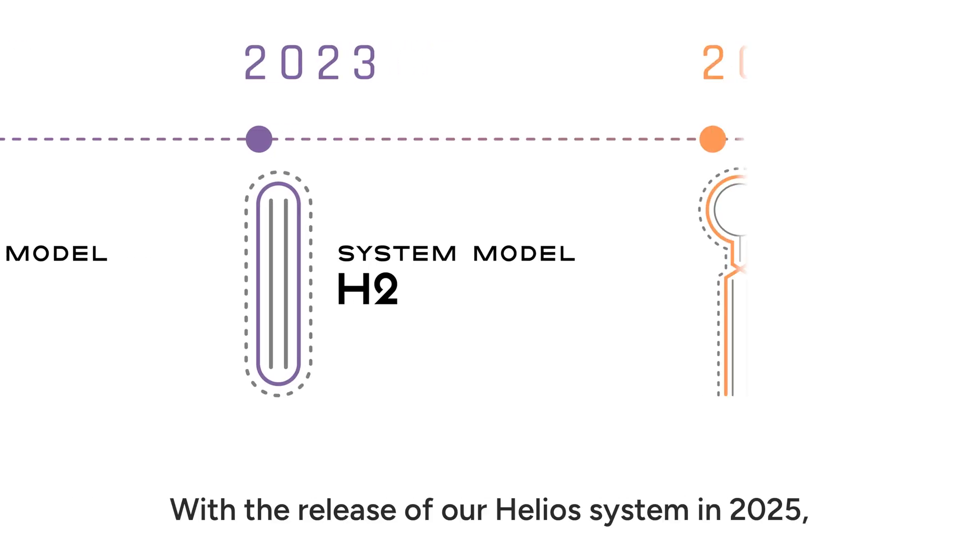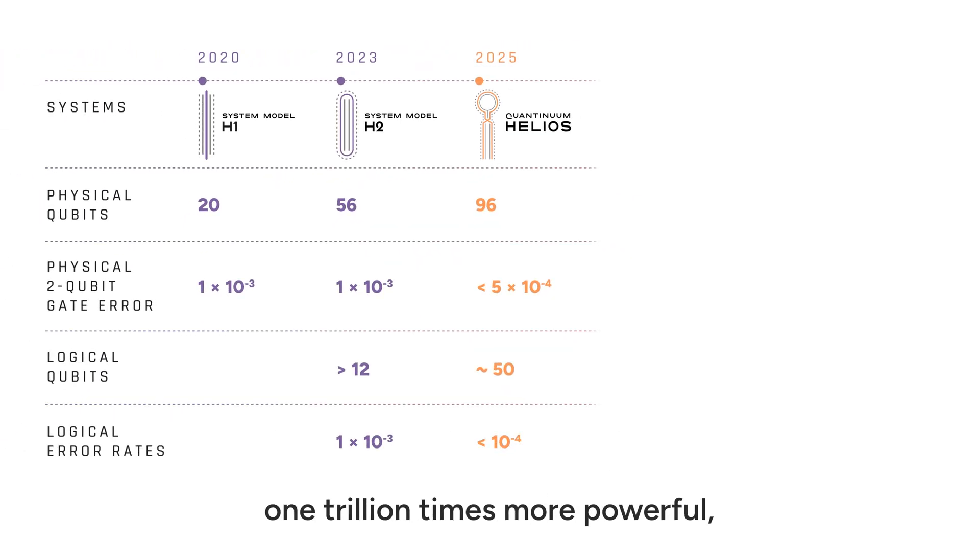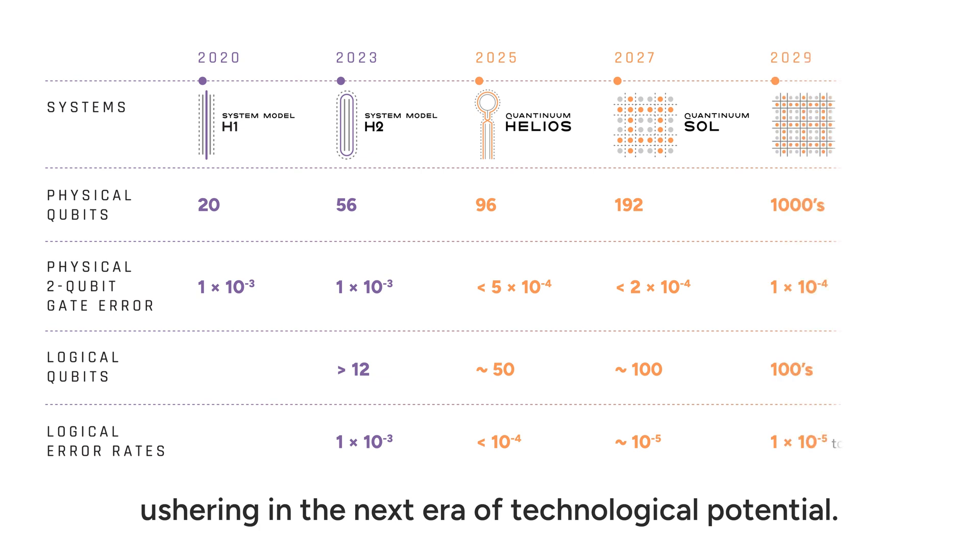With the release of our Helios system in 2025, our quantum computer grows one trillion times more powerful. Ushering in the next era of technological potential.